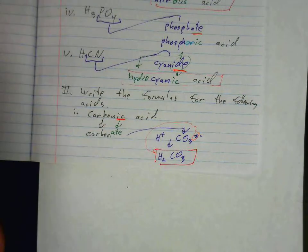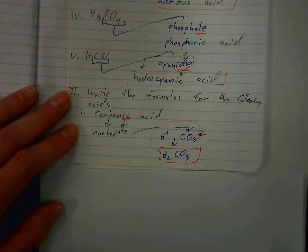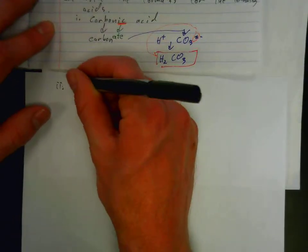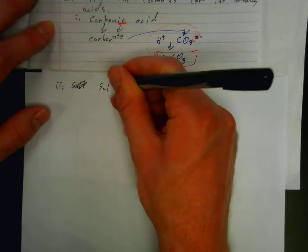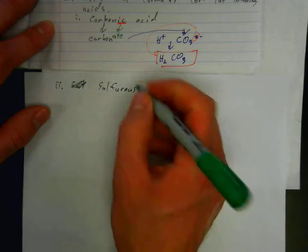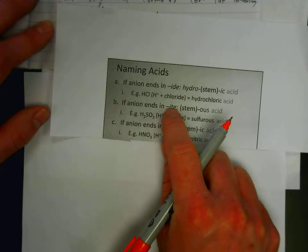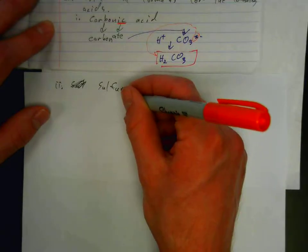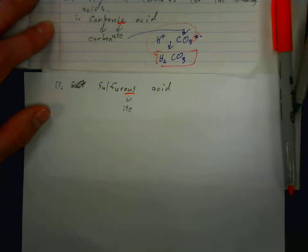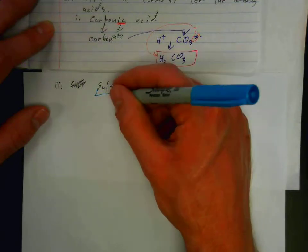How about another example? Let's take a look at sulfurous acid. We look at the parts of the name. It ends in OUS in this case. So the OUS means that it had to have come from an ITE, an ion that ended in ITE. So we know that we had here an ITE. If we take the stem down, now in this case, a couple of letters were added here with the exception. So the stem is just the sulf part. The UR was added in.